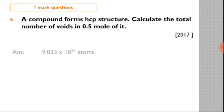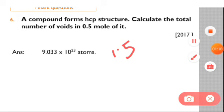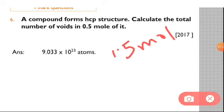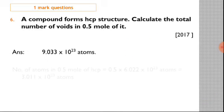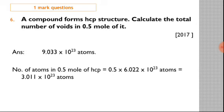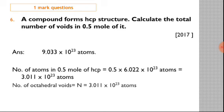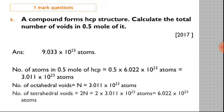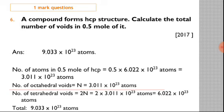We can calculate this as 1.5 times 6.022 times 10 to the power 23 atoms. The number of atoms in 0.5 mole is 3.011 times 10 to the power 23 atoms. The number of octahedral voids n will be the same as the number of atoms, and tetrahedral voids will be 2n. So if we calculate the total, it will be 9.033 times 10 to the power 23 voids.